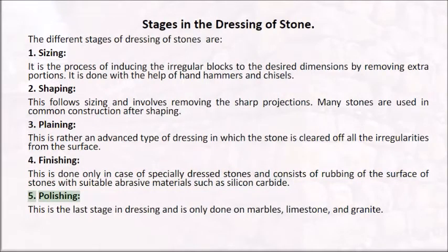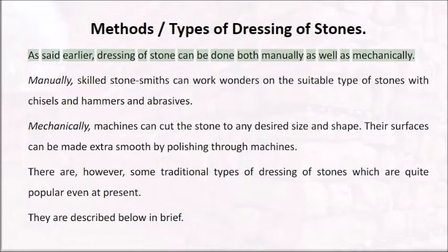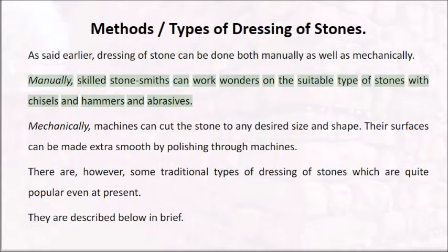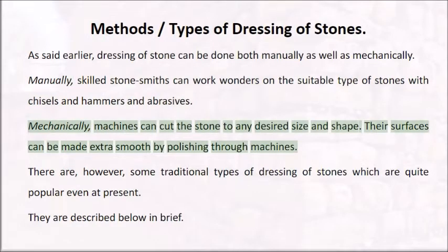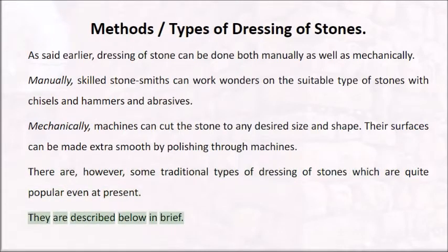5. Polishing — the last stage in dressing, done only on marbles, limestone, and granite. Dressing of stone can be done both manually and mechanically. Manually, skilled stonesmiths can work wonders on suitable types of stones with chisels, hammers, and abrasives. Mechanically, machines can cut the stone to any desired size and shape, and surfaces can be made extra smooth by polishing through machines. There are also some traditional types of dressing of stones which are quite popular even at present.